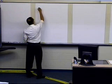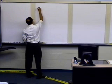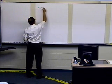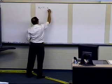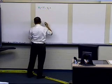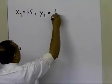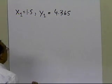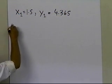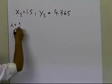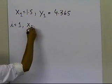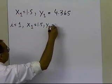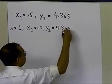Let's look at the next step. We just calculated x1, which is 1.5, and the corresponding value of y which we calculated at that particular point was 4.365. So what we want to do is now use i equal to 1, and of course x1 is 1.5, and y1 is 4.365.